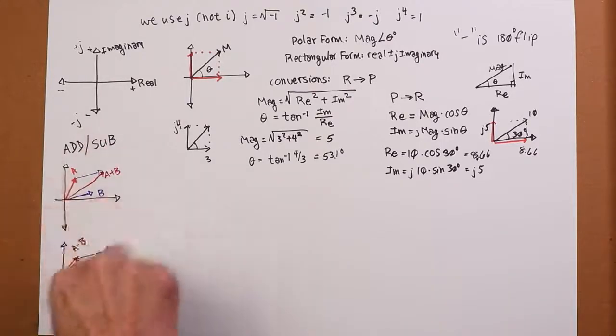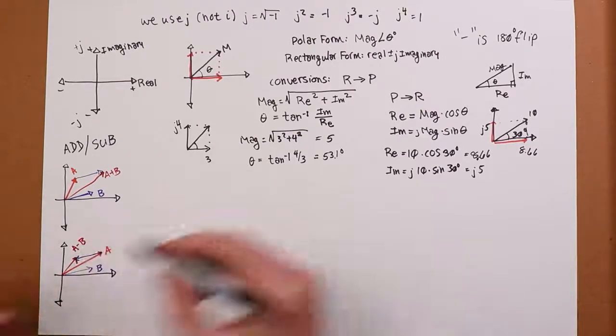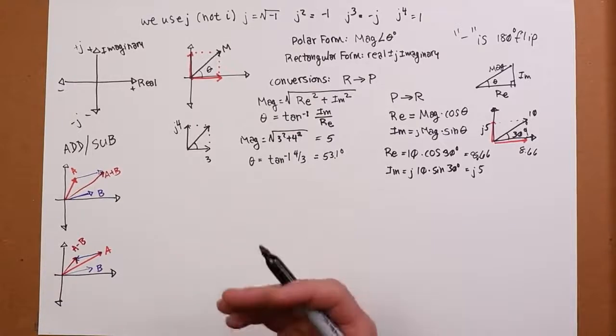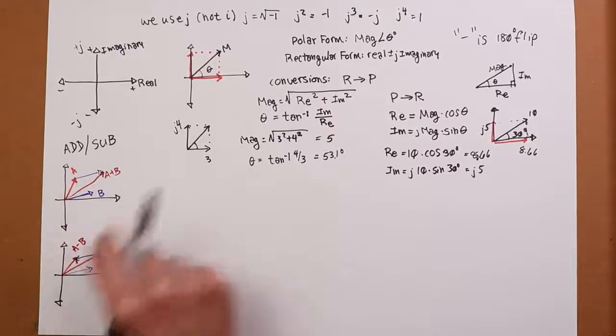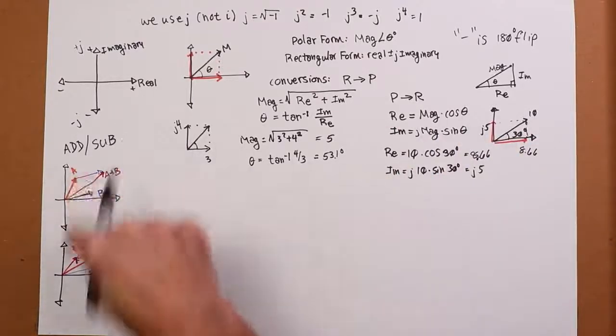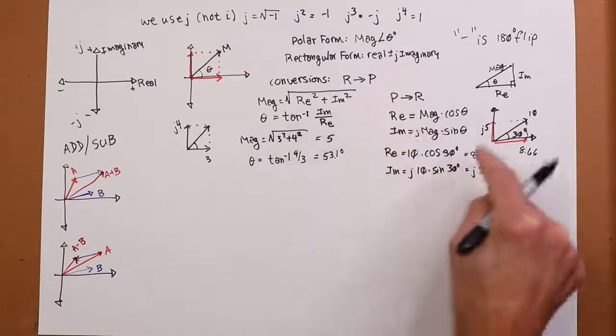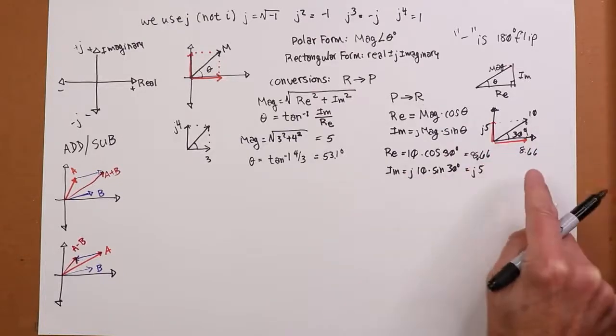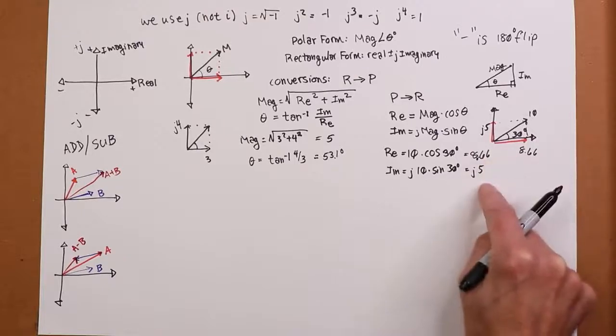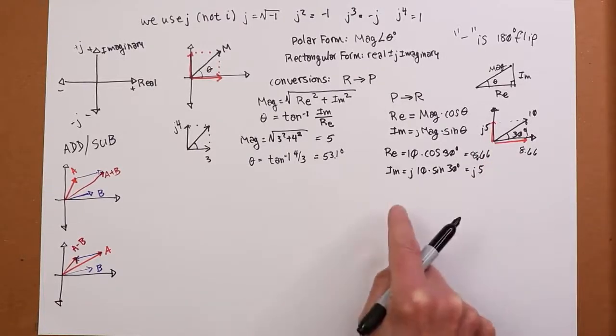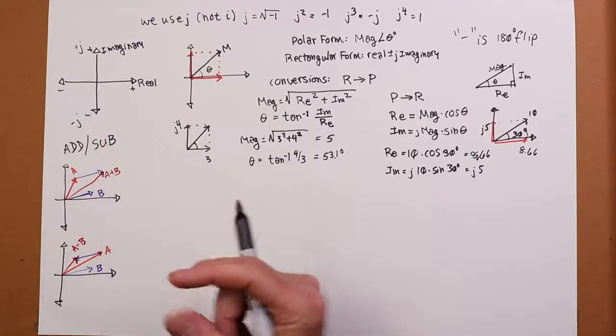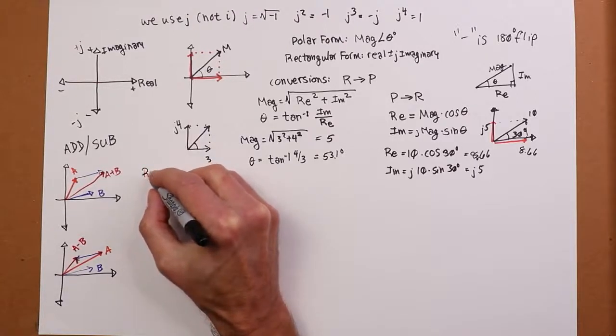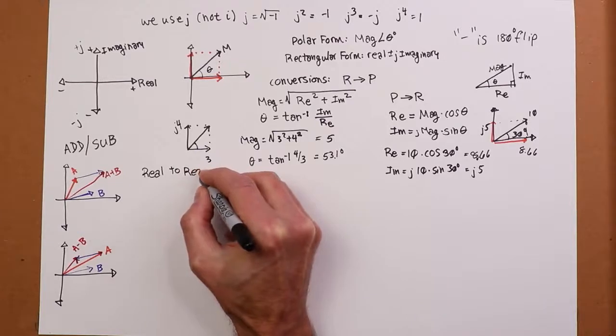So this is useful when we do what are called phasor diagrams. It's useful to have an image in your head of what this actually is. But computing it is not convenient to get out a piece of graph paper and do this. So the easy way to do an add or subtract, whatever form they're in, make sure you do the add or subtract in rectangular. So if it's in polar, do a conversion. If you have 10 at an angle of 30, convert it into the real of 8.66 and the imaginary of J5. And what you do is you simply add or subtract the reals to the reals, the imaginaries to the imaginaries. Real to real, imaginary to imaginary.